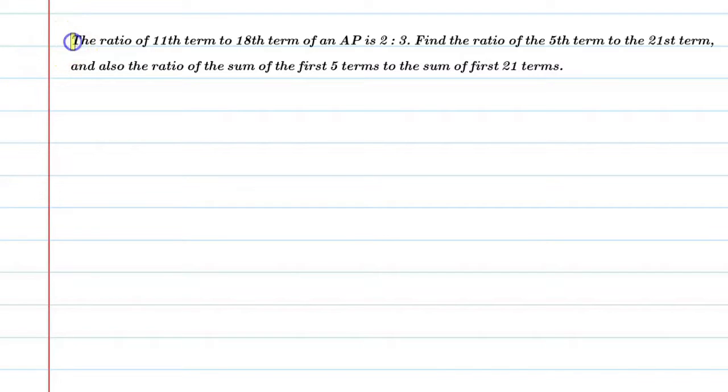Hello students, let's solve this question. The ratio of 11th term to 18th term of an AP is 2 ratio 3. Find the ratio of the 5th term to the 21st term and also the ratio of the sum of the first 5 terms to the sum of first 21 terms.